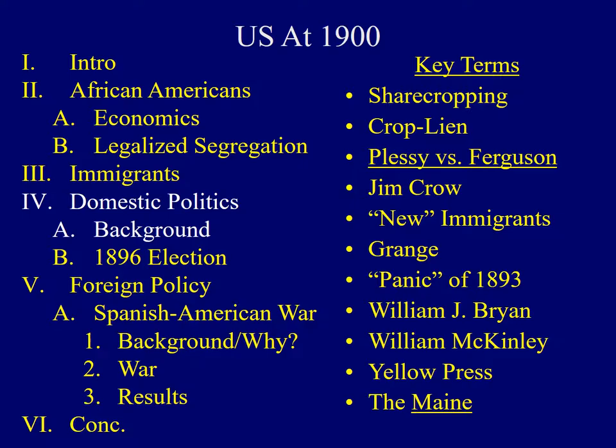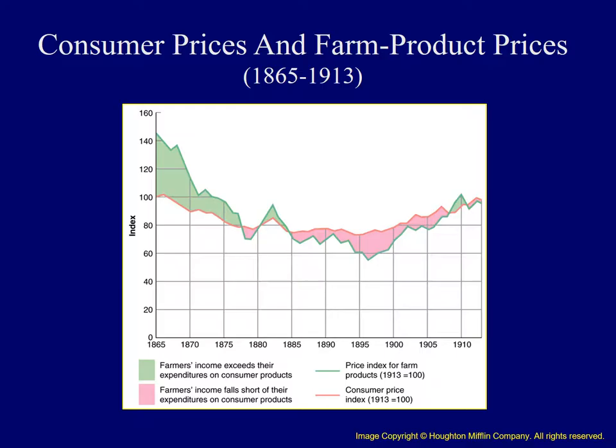Now we can investigate the background to domestic politics in the United States by looking at some of the conditions faced by farmers, as well as the economic crisis that hit the nation in the 1890s. In the years after the Civil War, many people moved out west to establish their own farms. As shown in lecture number two, things like the Homestead Act encouraged people to move west. Some people prospered, but many hadn't.